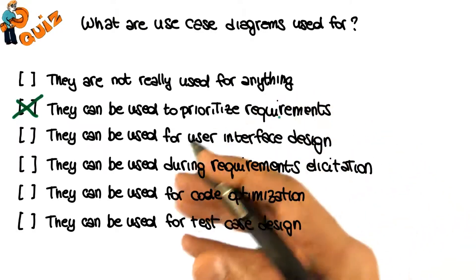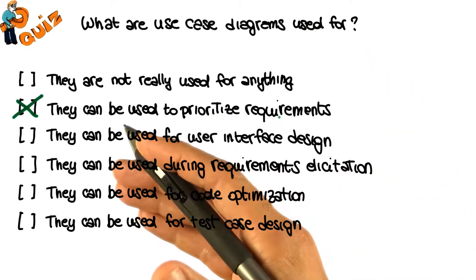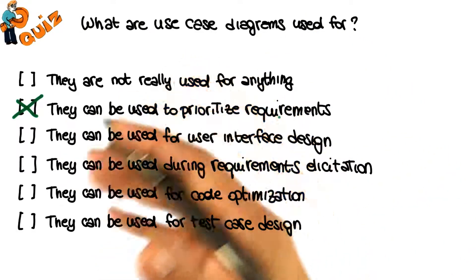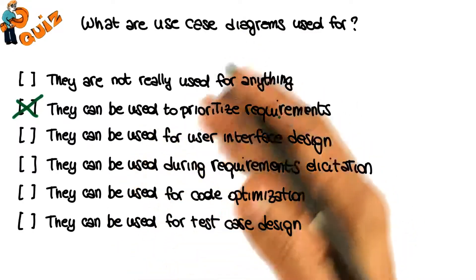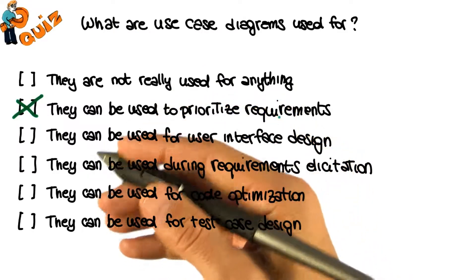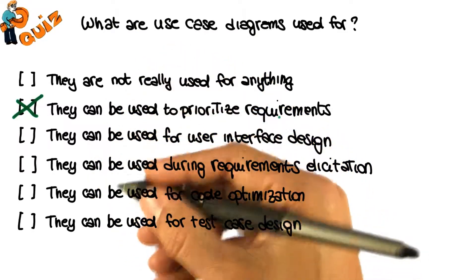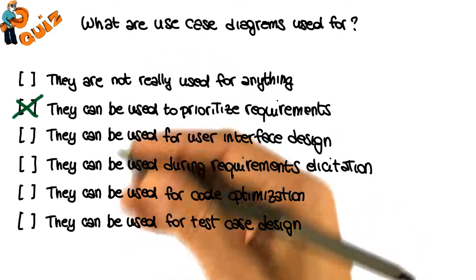Basically, what you're doing is prioritizing either in terms of functionality, so you can decide which piece of functionality you want to realize first in your system. Or you can also prioritize based on the actors involved. Maybe there are some actors or user roles that you want to support before others. We'll see some examples of that.